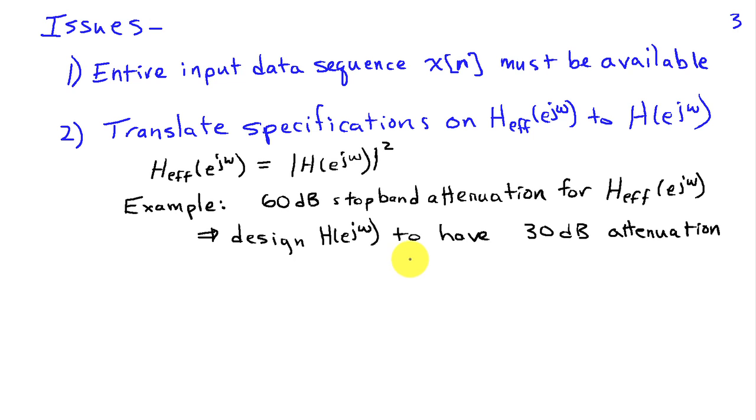And the same sort of thing applies to critical frequencies in the pass band or pass band distortion. If you require that your overall filter only have one dB of ripple in the pass band, then you're going to have to design your filter that you implement in this process as having one half dB of attenuation, because the overall effective filter function is going to have twice the ripple expressed in dB of the original filter.